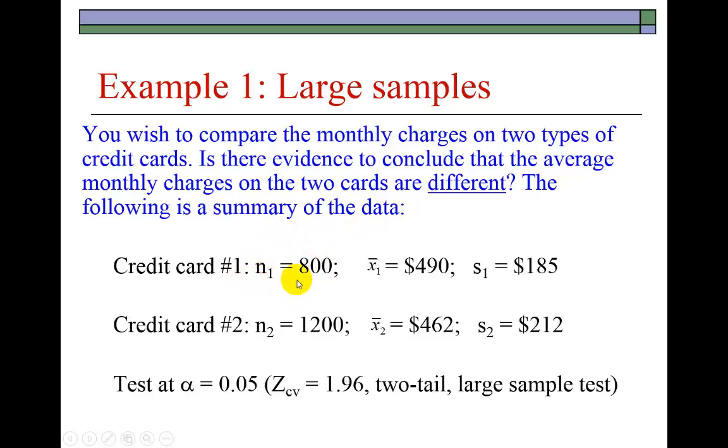Without showing the data set, here's a summary. Out of population number one, we observed 800 transactions and found the average charge to be $490 with a standard deviation of $185. For credit card number two, we looked at 1,200 transactions and found the average charge to be $462 with a standard deviation of $212.